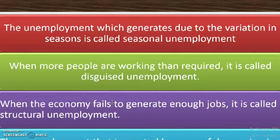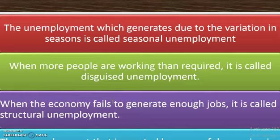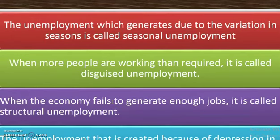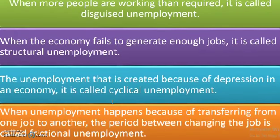Structural unemployment mainly occurs on the part of employers — the companies that provide jobs. For example, if one lakh people complete mechanical engineering expecting jobs, but mechanical companies suddenly stop hiring, those one lakh engineers become unemployed. When companies are not generating jobs, that kind of unemployment is known as structural unemployment.